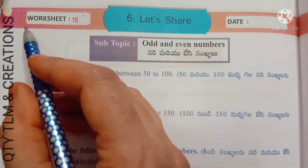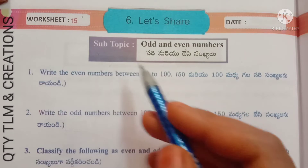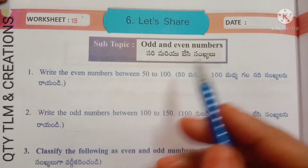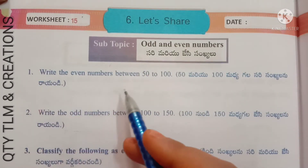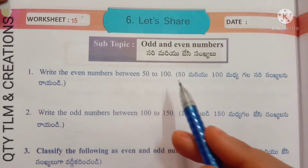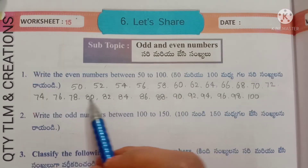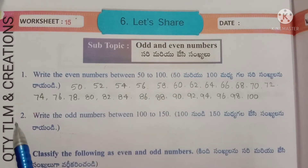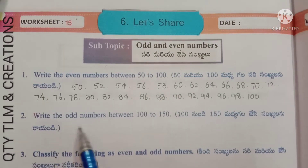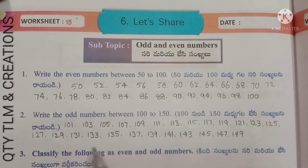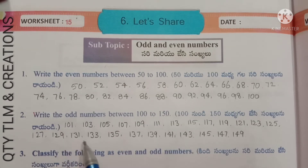Next, worksheet number 15, subtopic: odd and even numbers. First question: write the even numbers between 50 to 100 — these are the even numbers. Next question: write the odd numbers between 100 to 150 — these are the odd numbers between 100 to 150.